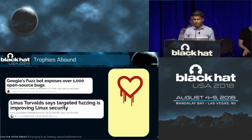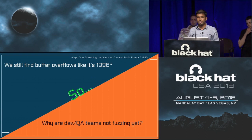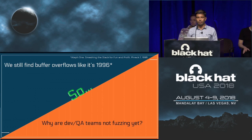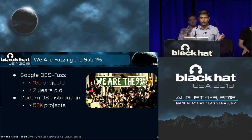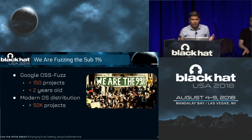So clearly, we've come a long way and made a lot of progress. But yet, we still find buffer overflows in various programs like it's 1996. There's a divergence between what exists and the kind of bugs we find today. The question is: why aren't developers and QA teams fuzzing yet? The truth is actually that we are fuzzing, but we are fuzzing the sub-1%. If you look at the scale of software shipped in a modern OS distribution — typically around 50,000 software projects — and the most popular open source fuzzing initiative, Google OSS Fuzz, it only contains 150 software projects. So this is less than 1% of the software shipped to end users.